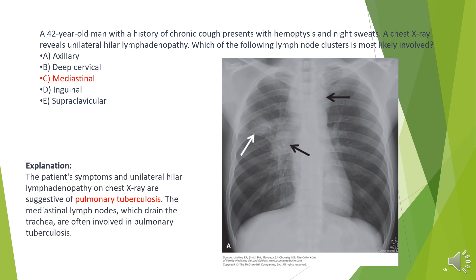The answer is C. Mediastinal. The patient's symptoms and unilateral hilar lymphadenopathy on chest X-ray are suggestive of pulmonary tuberculosis. The mediastinal lymph nodes, which drain the trachea, are often involved in pulmonary tuberculosis.